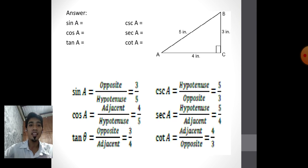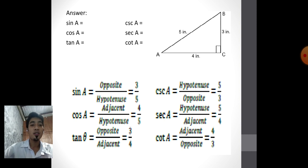Time's up. These are the answers. Sine A — opposite over hypotenuse — the opposite is 3 and the hypotenuse is 5, so sine A = 3/5. Cosine A — adjacent over hypotenuse — adjacent is 4, hypotenuse is 5, so cosine A = 4/5. Tangent A — opposite over adjacent — the opposite is 3 and the adjacent is 4, so tangent A = 3/4. To get cosecant, secant, and cotangent, just take the reciprocal of sine, cosine, and tangent: cosecant A = 5/3, secant A = 5/4, cotangent A = 4/3.